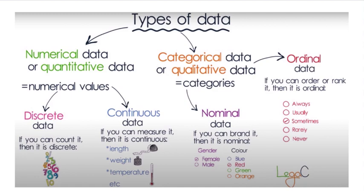Data can also be classified into various types based on different characteristics and properties. For example, categorical data represents variables that can be divided into distinct categories or groups. It is qualitative in nature and often represented by labels or names rather than numerical values.